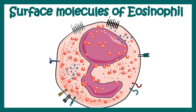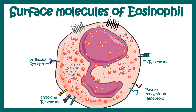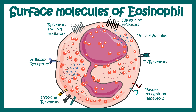In terms of surface molecules, there are different categories of surface receptors such as cytokine receptors, pattern recognition receptors, various TLRs and PRRs, Fc receptors, adhesion receptors such as integrin receptors, chemokine receptors, and receptors for lipid mediators like leukotrienes and prostaglandins. There are also primary granules and lipid bodies.